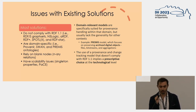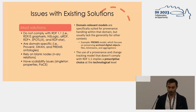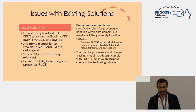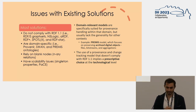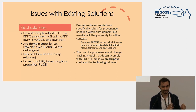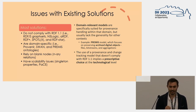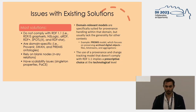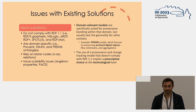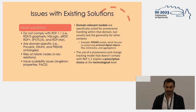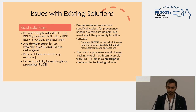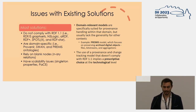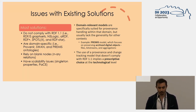The problem with most of those solutions is that they do not comply with RDF 1.1 — for example, RDF graph sets or SPOTL-X. The problem with not complying is that you are stuck with that system. For example, you cannot use SPOTL-X outside of Yago, or in all RDF-based systems. So if you want to use RDFLib in Python or Blazegraph, it will probably only work with a syntax that complies with RDF 1.1. Other solutions are too specific — for example, PREMIS is not relevant if you don't deal with files, bitstreams, and aggregations — or they rely on blank nodes or have scalability issues.